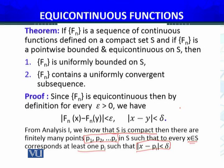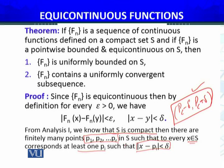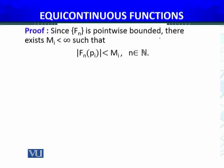Each such point pi is the center of the interval (pi − delta, pi + delta). Since fn is pointwise bounded, there exists Mi finite — less than infinity — such that |fn(pi)| < Mi for each p1, p2, up to the finitely many points pi.